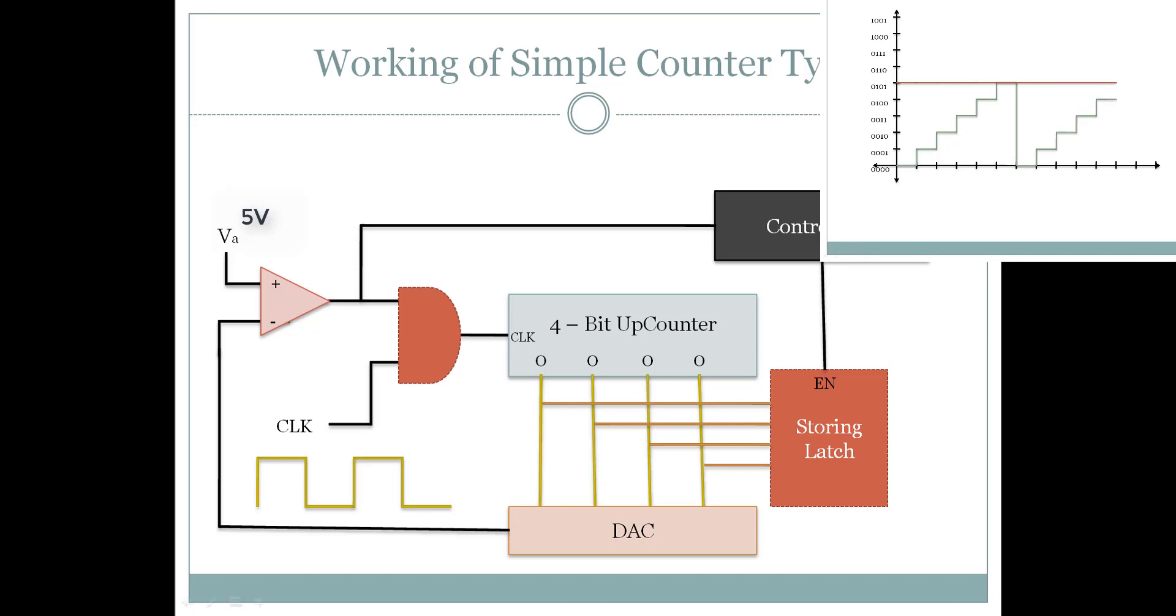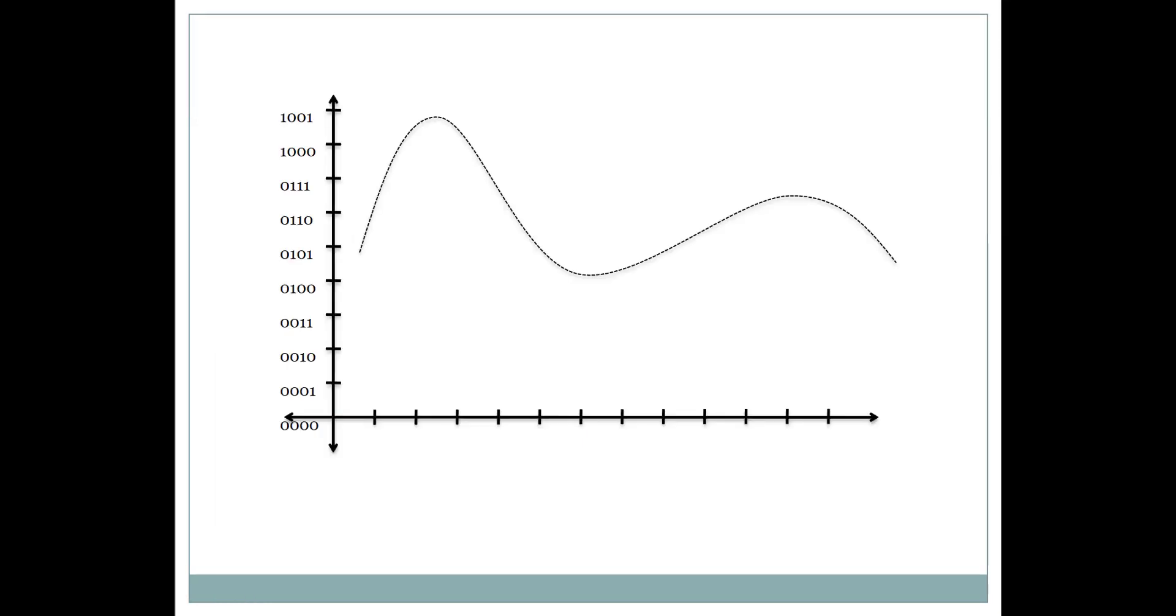In a real case scenario, the input voltage won't always be a fixed voltage. Let's assume this wave as an input. The output of digital to analog converter, which reflects the counter value when plotted against time, increases in the following manner with each cycle of the clock pulse.